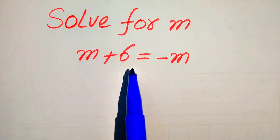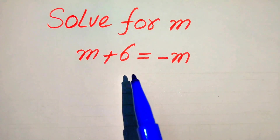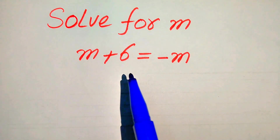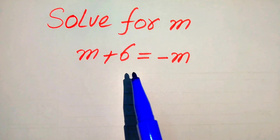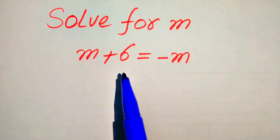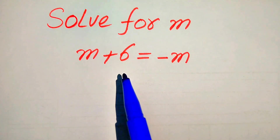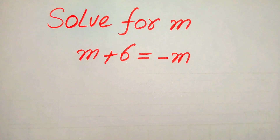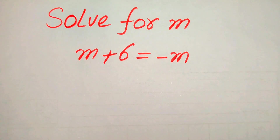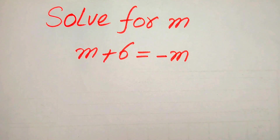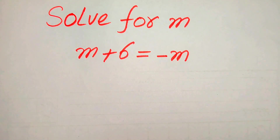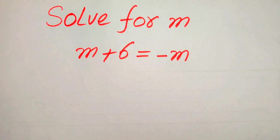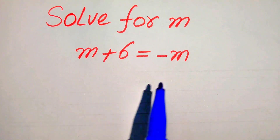Here you see that the variable term m is involved on both of the sides, so first we move the variable terms to the left hand side. I hope you like this method, but if you have any other method in mind, please don't hesitate to write it in the comment section.